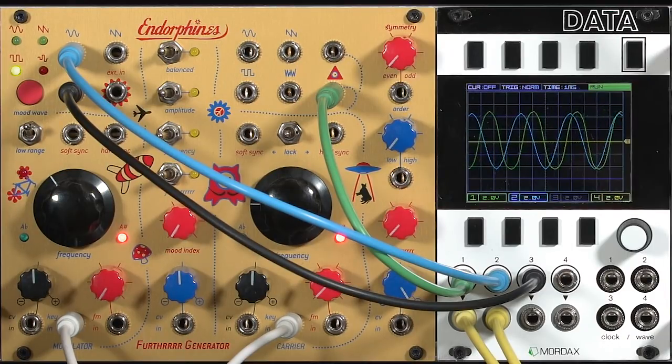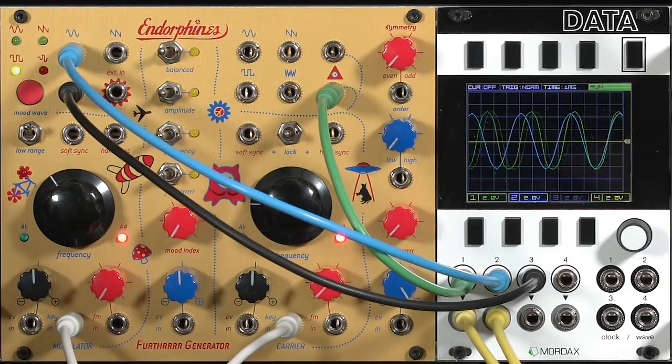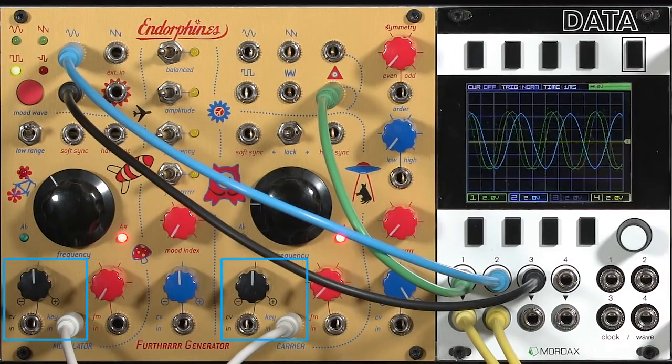The Endorphin's Further Generator is a very flexible complex oscillator, and that extends to the way it implements frequency modulation. It has both linear and exponential frequency modulation controls on the front panel.